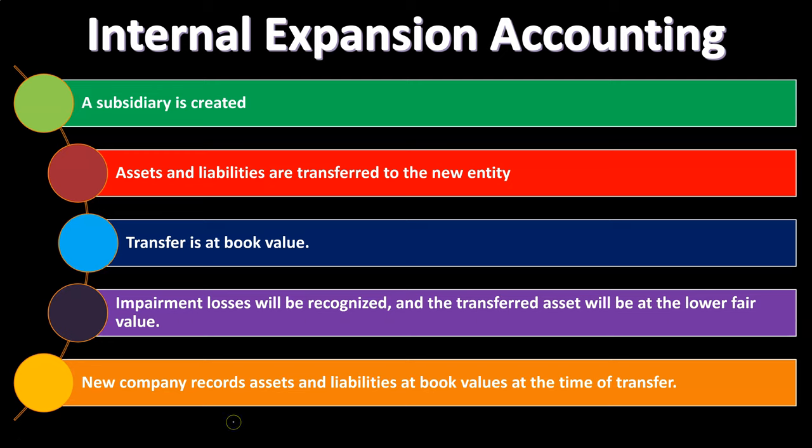The new company records assets and liabilities at book values at the time of transfer. To visualize: the parent company wants to expand and creates a separate legal entity, then takes the assets and liabilities from the parent and transfers them into that separate legal entity at book value — because there's no arm's-length transaction. There's no market transaction; it's one entity becoming essentially two entities with no negotiation. However, if there are impairments, in alignment with standard accounting rules, we would write down the assets according to the conservative principle and record them at the lower amount — so basically at fair value for the subsidiary.